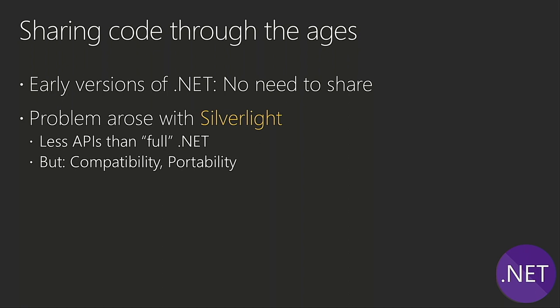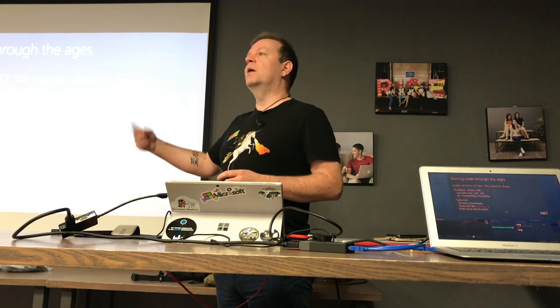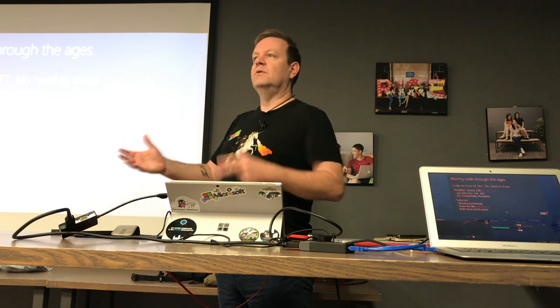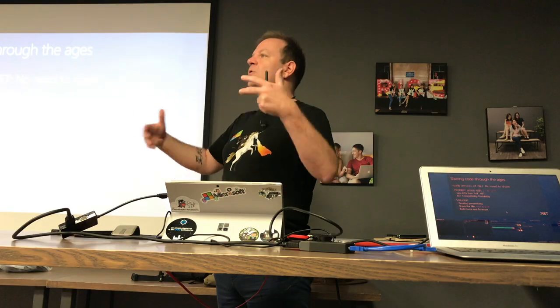So how did we do things back then when we wanted to share code? What we would do is what I'd call 'develop preventively' - every time we wanted to use an API in a class library, we would check: is this API also available on Silverlight? For example, HTTP client in the beginning was only in the full .NET - you didn't have it in Silverlight, so you had to use HTTP web requests instead, which was more complicated. Then in later versions of Silverlight, HTTP client came and we could use it. We would share the files between the Silverlight and WPF application using a feature called 'Add as a Link', build twice, and if you had errors, fix them - sometimes with precompiler directives, which makes the code a little dirty.